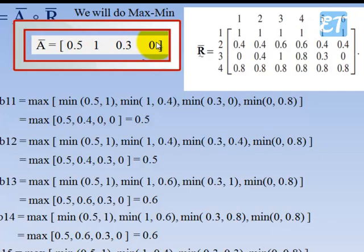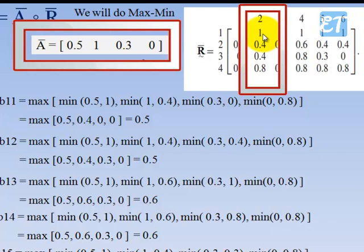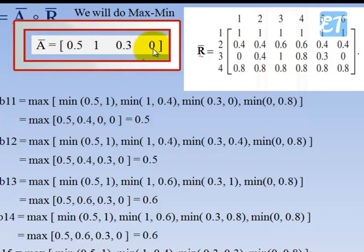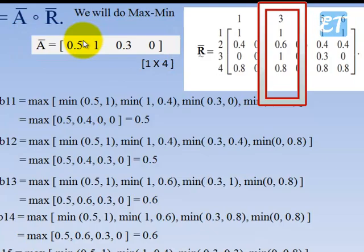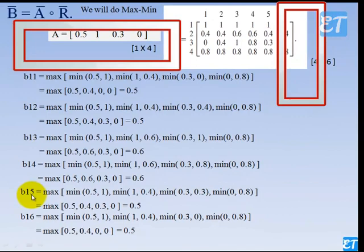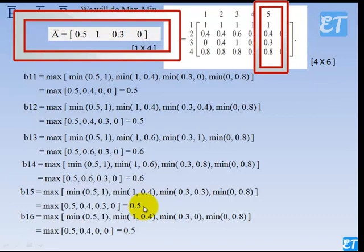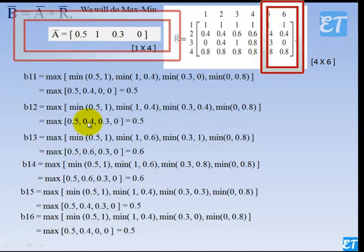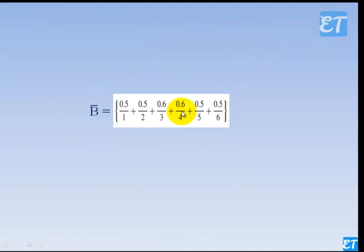Now we find B12 using this row and the second column. Min of 0.5 and 1 is 0.5; min of 1 and 0.4 is 0.4; min of 0.3 and 0.4 is 0.3; min of 0 and 0.8 is 0. The maximum amongst these is 0.5. Then B13 gives 0.6, B14 gives 0.6, B15 gives 0.5, and B16 gives 0.5.